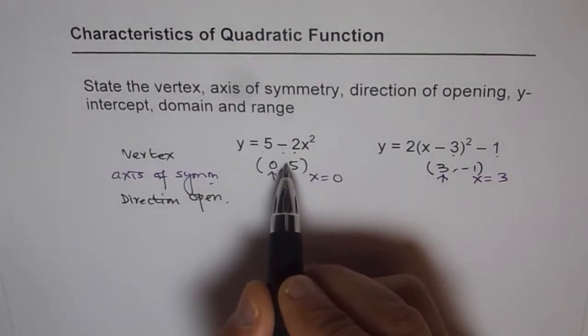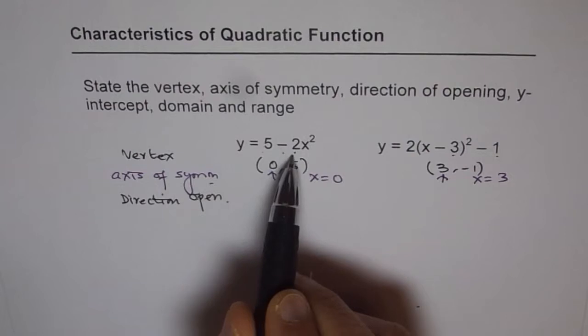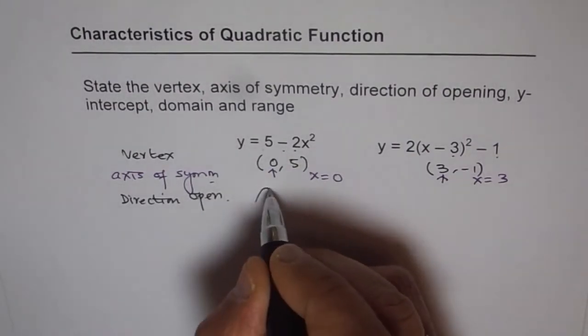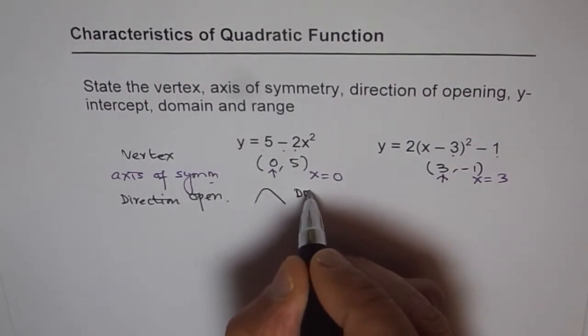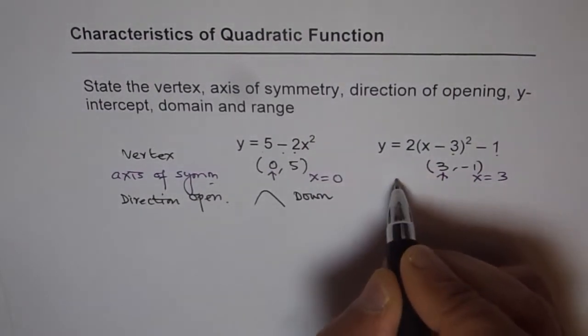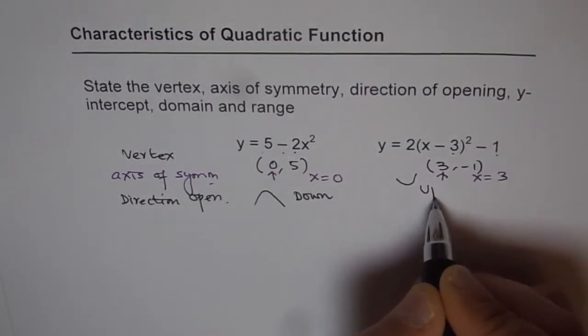Now in this case the leading coefficient is minus 2 not 5. So sometimes students do get confused. Minus 2 means it opens downwards. So direction of opening is downwards. In this case here it is plus 2. It opens upwards. This is up.